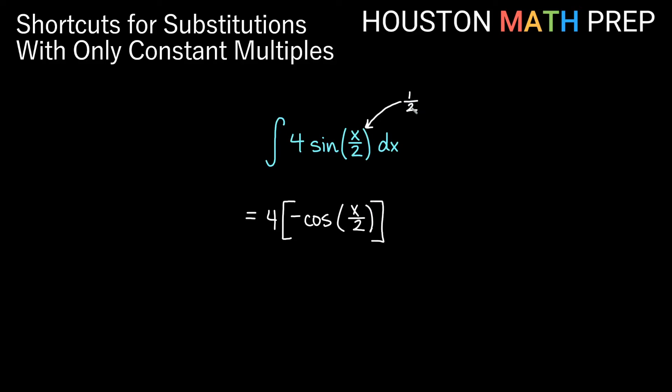And then we'll have the reciprocal of the one-half coming out because the only thing being done to x here is multiplied by a half. The reciprocal of a half is 2. So we'll multiply by 2 on the outside. We will get negative 8 cosine of x over 2 for this one plus our constant.